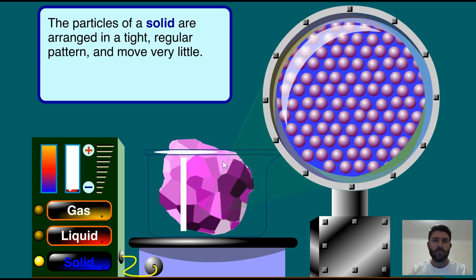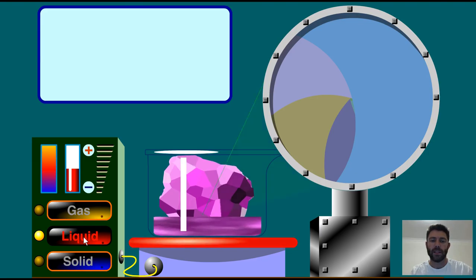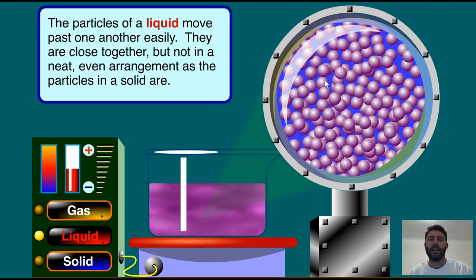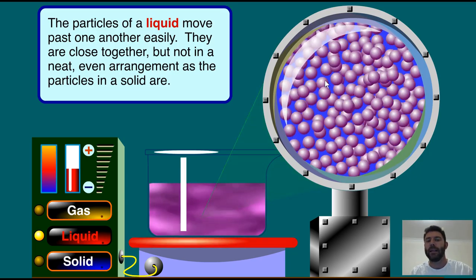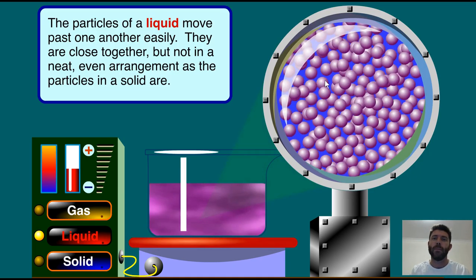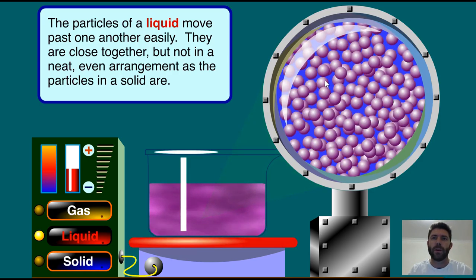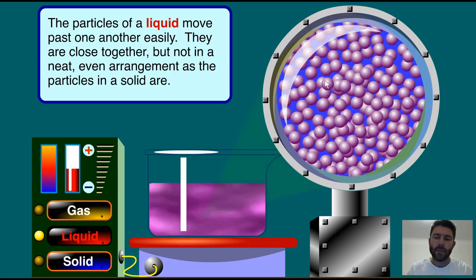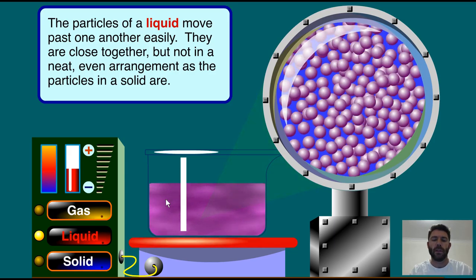As we add heat, the particles start to move faster and collide against each other more, then they start to move apart further. The energy they've gained overcomes the forces of attraction. The particles are still close together with attraction between them, but it's not as strong, and now they can actually start to flow. We see a liquid motion where they flow over each other and take the shape of the container.